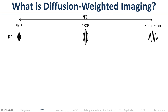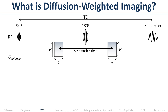When you do a spin echo sequence, the echo time is the time between the peak of the excitation pulse and the peak of the spin echo — that's your TE. Now we add diffusion gradients: one gradient before the 180-degree pulse and one after. Both gradients point in the same direction, but because there's a 180 in between them, the second gradient effectively has opposite polarity. So the first gradient is a dephasing gradient, and the second is a rephasing gradient, because even though it points the same direction, it's on the other side of the 180.